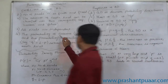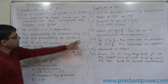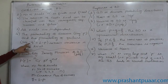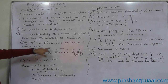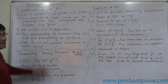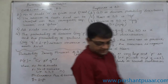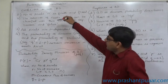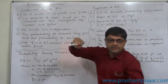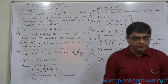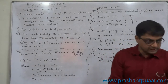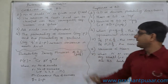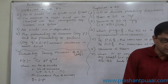The fourth condition is that the probability of success, denoted P, and the probability of failure, denoted Q (that is 1 minus P), remain constant in each trial. This is very important. The experiment is made up of the same type of trial, so the probability of success and failure also remain constant in each trial.